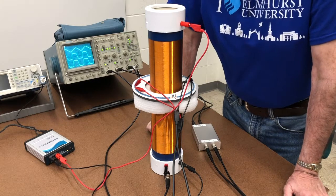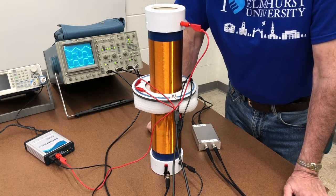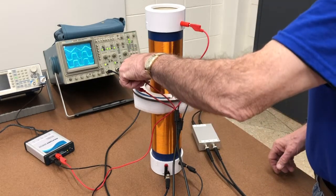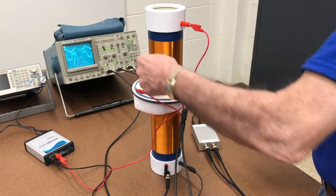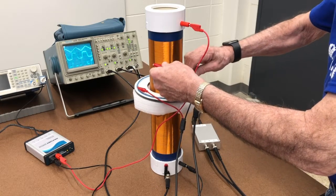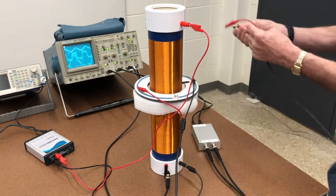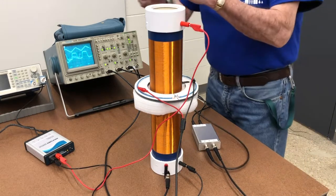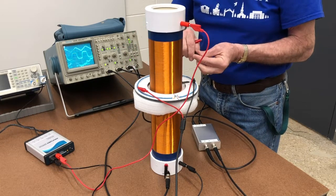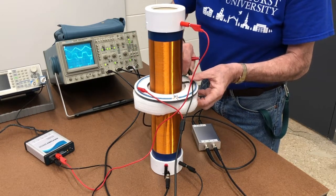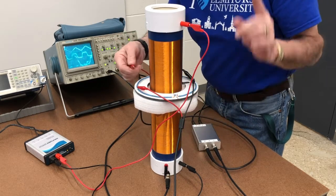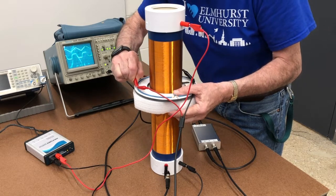But now I'm going to show you something that I think is going to surprise you. I'm going to disconnect channel B from where it was and reconnect it on this side of the coil. Connecting up my ground over here and the red lead, which is the same thing that we had before, over here.